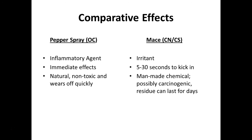Tear gas is a man-made chemical that is possibly carcinogenic and has been linked to liver failure, heart conditions, and a number of other health issues since its inception. The residue from CN and CS can actually last for days, whereas OC from pepper spray only lasts about an hour before it's gone. Those are the main differences between mace and pepper spray.